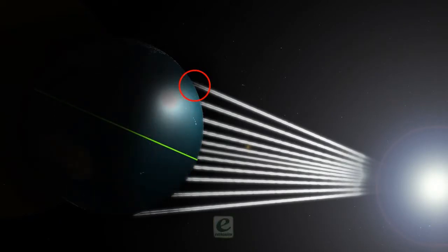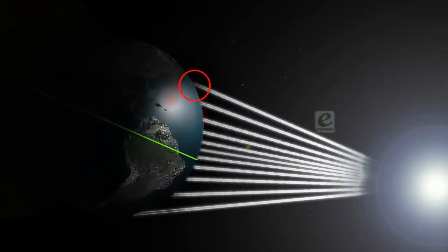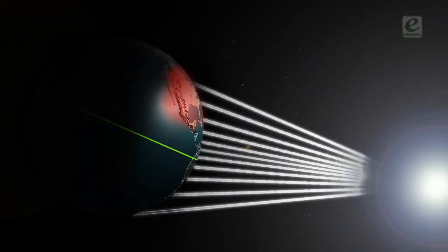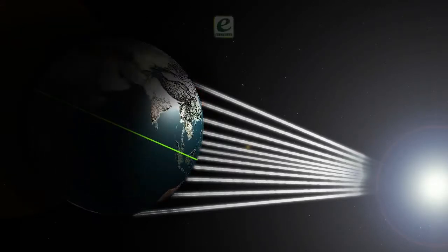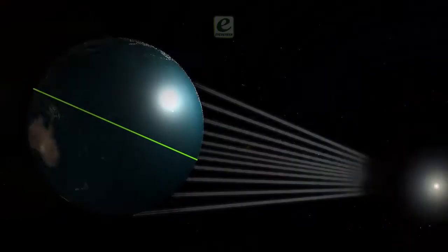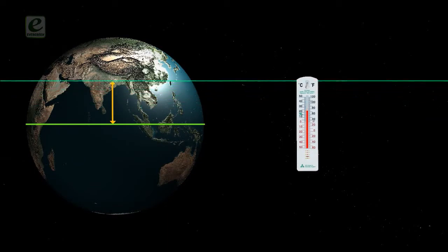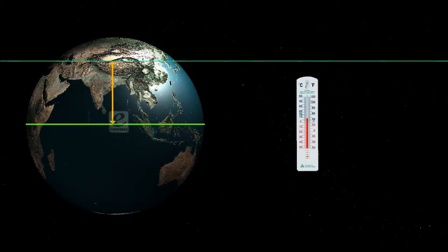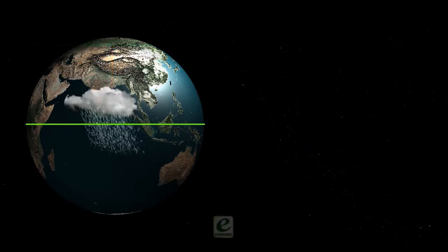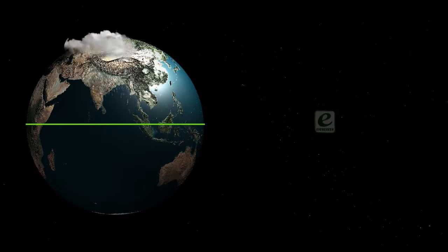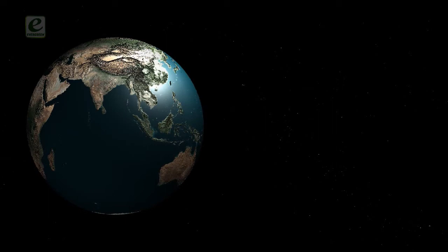The slanting rays of the sun spread the heat over a larger area, so they do not heat to the same extent as the direct rays. Thus, the temperature decreases as the distance increases from the equator. The amount of rainfall also decreases from the equator to the poles, since the rate of evaporation is related to temperature.